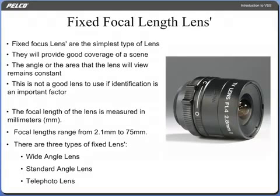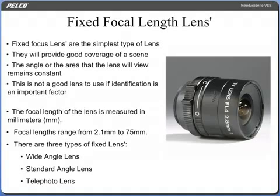Fixed focus lenses are the simplest type of lenses and therefore the least expensive. They will provide good coverage of a scene, but objects will look smaller on the monitor. The angle or the area that the lens will view remains constant. This is not a good lens to use if identification is an important factor. The focal length of the lens is measured in millimeters, with focal lengths ranging from 2.1 millimeters to 75 millimeters.